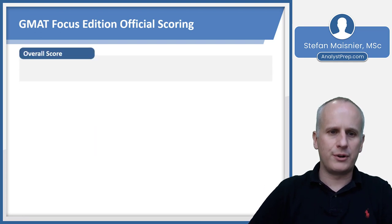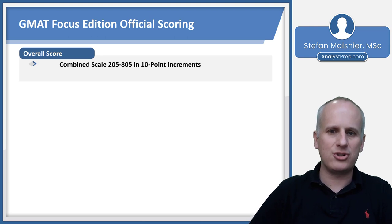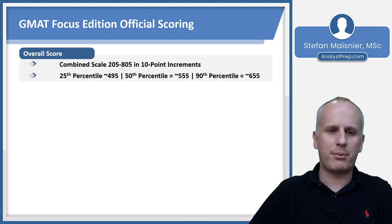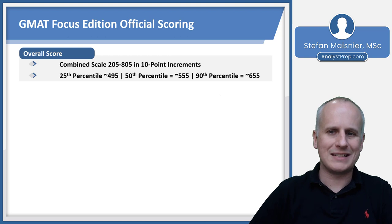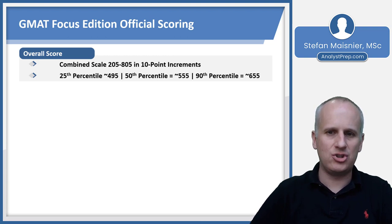For official scoring, the overall GMAT Focus Edition score is combined on a scale of 205 to 805 in 10-point increments — intentionally differentiated from the legacy GMAT. Percentiles are approximately: 495 for the 25th percentile, 555 for the 50th percentile, and 655 for the 90th percentile. This is quite different from the legacy GMAT, where the 50th percentile was pushing 600 and the 90th percentile was pushing 700 to 720, so don't expect your GMAT Focus score to match your legacy GMAT percentiles.